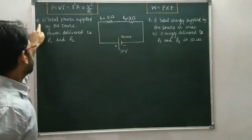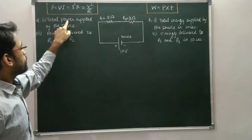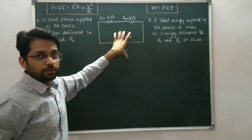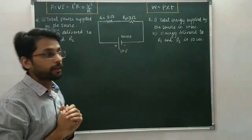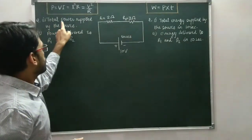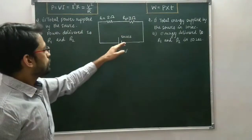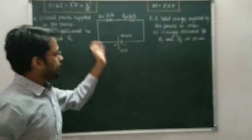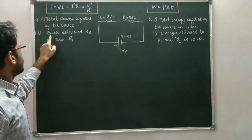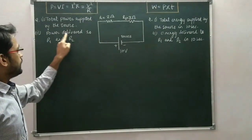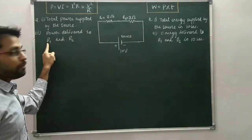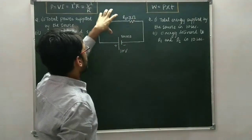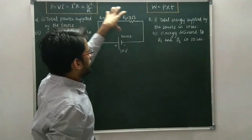The first question is: find the total power supplied by the source. The source is supplying power, so we have to calculate the total power supplied by the source. The second question is: how much power is delivered to the elements R1 and R2?